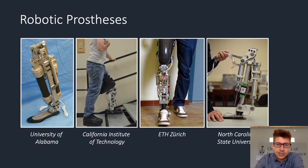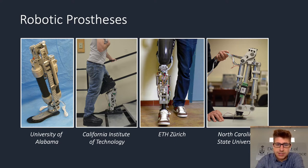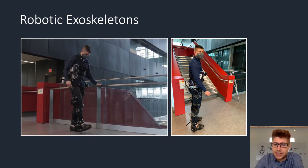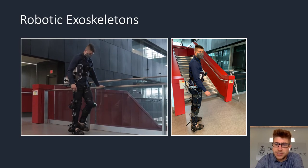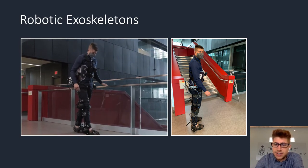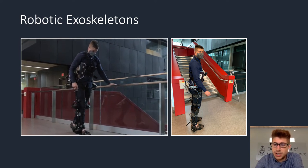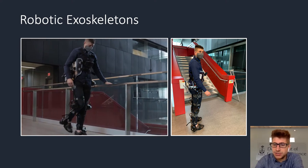Fortunately, robotic prosthetics can replace the propulsive function of amputated biological legs and allow patients to perform daily locomotor activities that require power generation, for example climbing stairs. There are also robotic exoskeletons which act in parallel with the musculoskeletal system and can replace the propulsive function of weakened or impaired biological muscles due to aging and or physical disabilities.